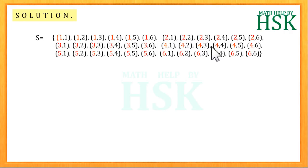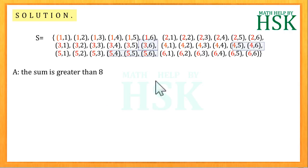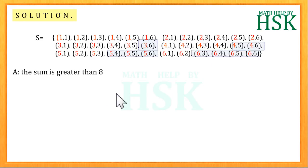A is the event such that the sum is greater than 8. For this we can see that outcomes (3,6), (4,5), (4,6), (5,4), (5,5), (5,6), (6,3), (6,4), (6,5), (6,6) are such that the sum is greater than 8. So all these events form the set A as shown.